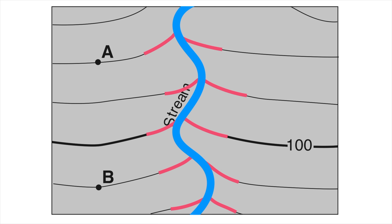That's how we do it. To sum up: rivers and streams always flow opposite the bends in the contour lines. Be sure to check out our next video in which we're going to talk about calculating gradient. Don't forget to subscribe and like on YouTube. Thanks very much.